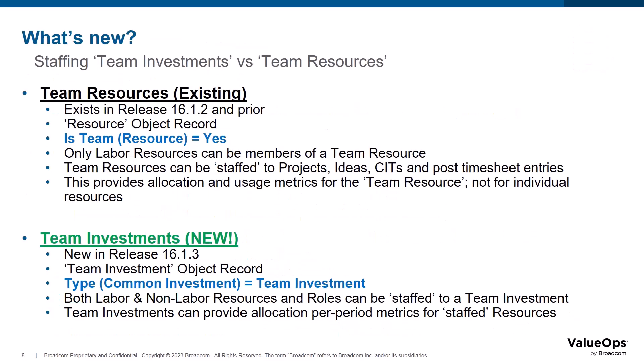In 16.1.2, you had very limited visibility into a team resource. Only labor resources could be a member of a team resource, and the team resource record could be staffed to projects, ideas, and custom investment types. Timesheet entries could be posted for the team resource, but there was no visibility into how much impact the allocation or total usage metrics had on the individual resource members of the team. Team resources can be identified by looking at the Is Team field from the resource object.